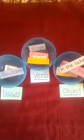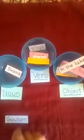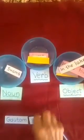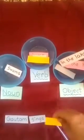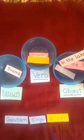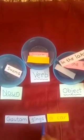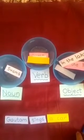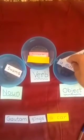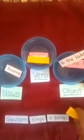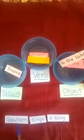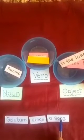Next, the noun is Gautam. Let us see — take the verb. Sings a car. Gautam sings a car — is it right? No, because a car, which is the object, doesn't relate with the verb sing. So let us see another object that matches with the verb. Gautam sings a song. The correct sentence is Gautam sings a song.